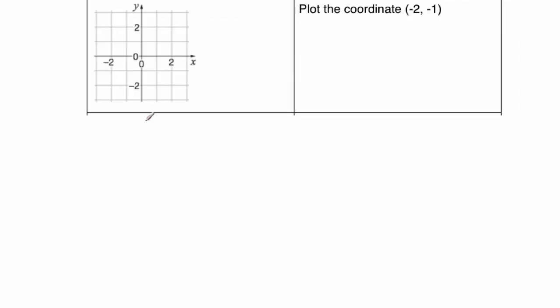Our next question is a coordinates question, and this is plot the coordinates minus two, minus one. So minus two would be there, minus one would be there — minus two along the corridor, one down the stairs. So that would be the point with coordinates negative two, negative one.